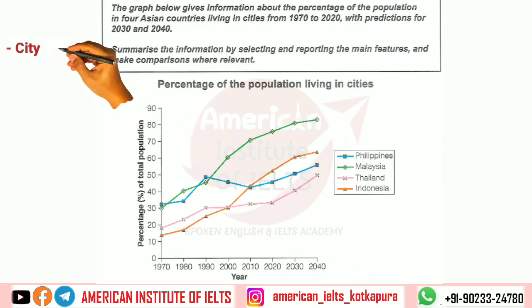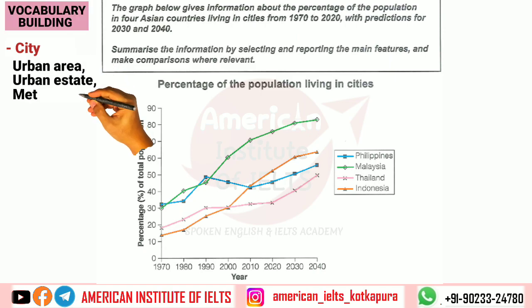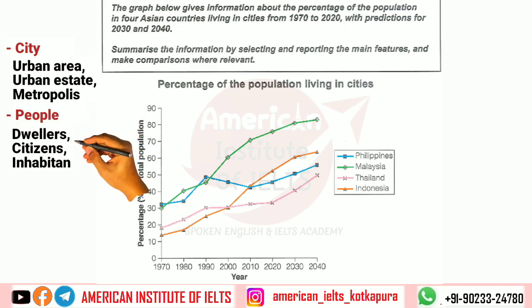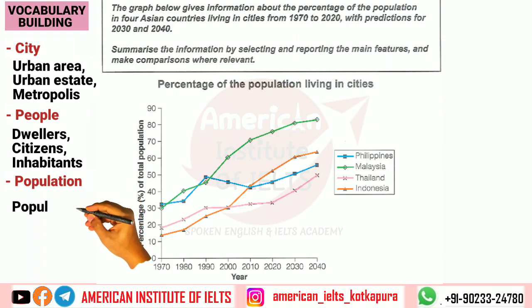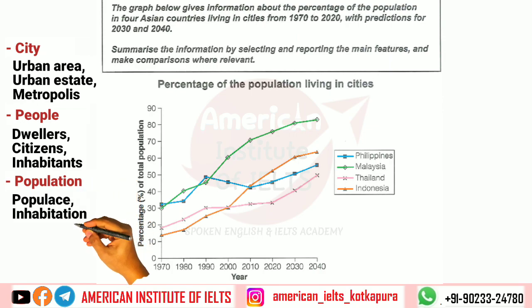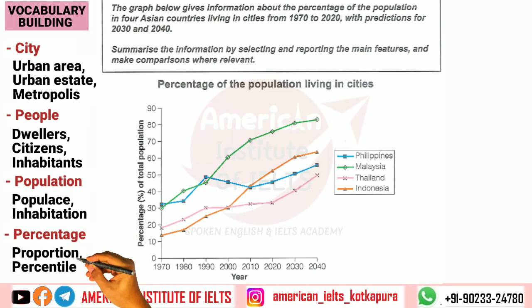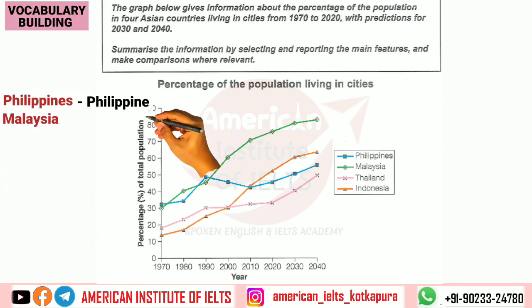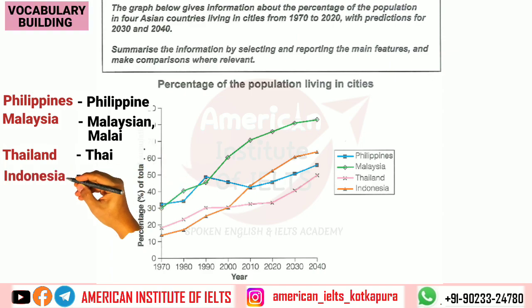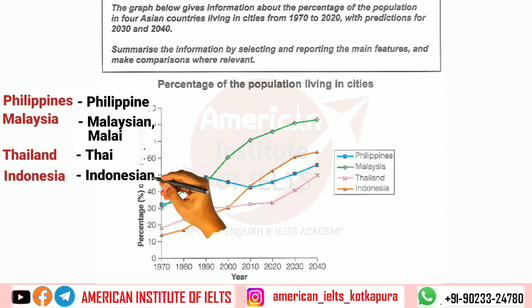Now let's do some vocab building. Since we need to talk about cities repeatedly, for city we can use words like urban area, urban state, and metropolis. For people, we can use dwellers, citizens, and inhabitants. For population we can use populace and inhabitants. For percentage, synonyms include proportion and percentile. Also, when referring to people from each country: Philippines → Philippine, Malaysia → Malaysian, Thailand → Thai, Indonesia → Indonesian. We will use these variations throughout.